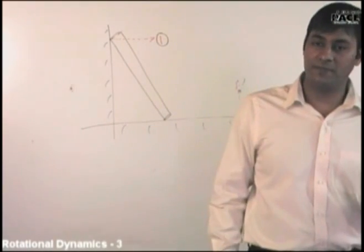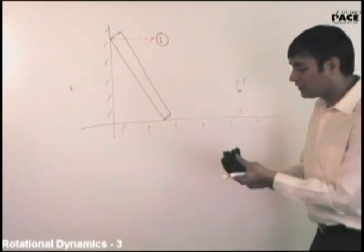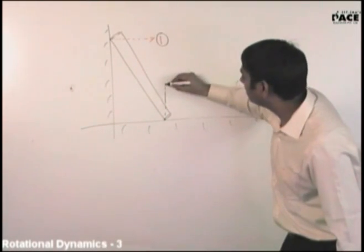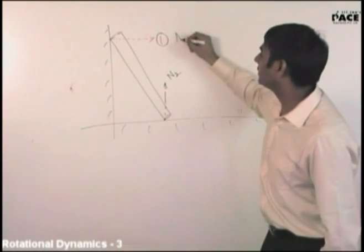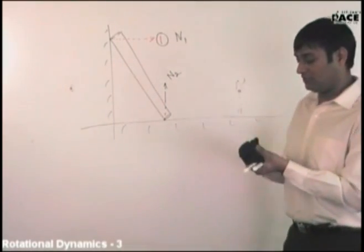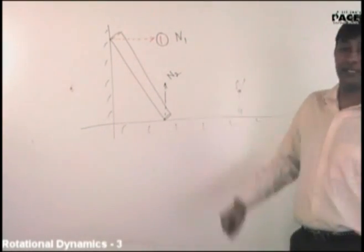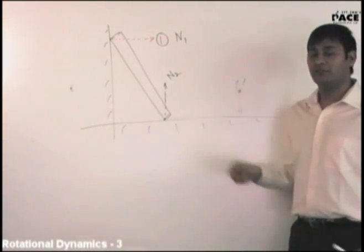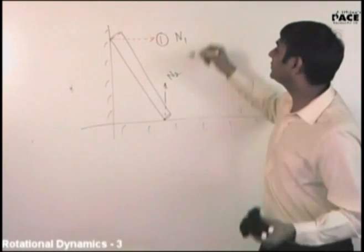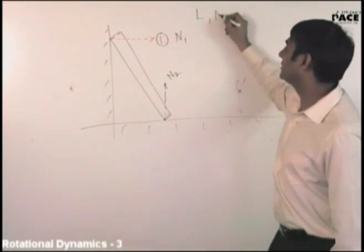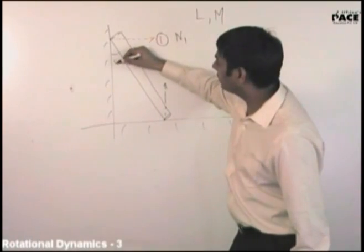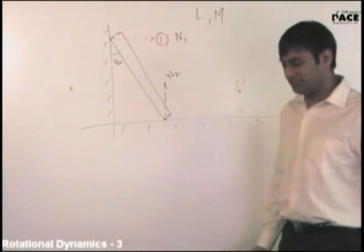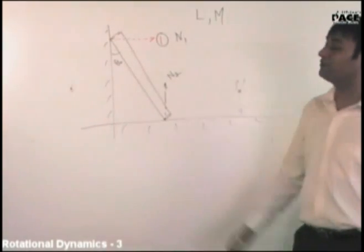So we know that the normal reaction from the wall will act in this direction - call it N1 - and the normal reaction from the ground will act in this direction - call it N2. Now, if I have to stop this rod from sliding, suppose the length of the rod is L, mass of the rod is M, and this angle is theta. All three things - M, L, theta - are given. I have to stop it from falling.